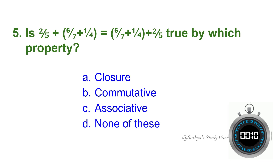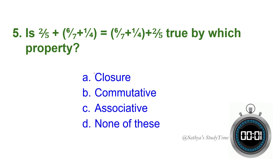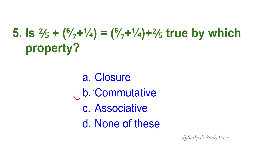Fifth question: Is 2/5 + 6/7 + 1/4 equal to a rearranged grouping of the same terms? The answer is commutative, because a + b + c = a + b + c holds regardless of order — demonstrating the commutative property of addition.